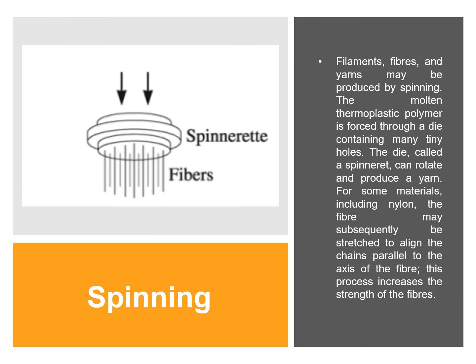For the spinning process, filaments, fibers, and yarns may be produced. The molten thermoplastic polymer is forced through a die containing many tiny holes called a spinneret, which can rotate to produce a yarn. For some materials like nylon, the fiber may subsequently be stretched to align the chains parallel to the axis of the fiber, which increases the strength of the fibers.